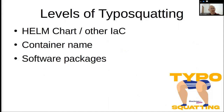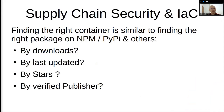Talking about the levels of typosquatting — typosquatting is when you try to mislead someone by choosing a similar name. In this case, we have the exact same name but different details. When talking about infrastructure as code, there are different levels of typosquatting: there might be typosquatting in the Helm chart or other infrastructure as code files, typosquatting on the container name, and of course regular typosquatting in software where the name of the packages might be misleading. In case we want to find the right container, we need to go to a search engine and search — and rate by downloads, last update date, stars, verified publishers, and so on.